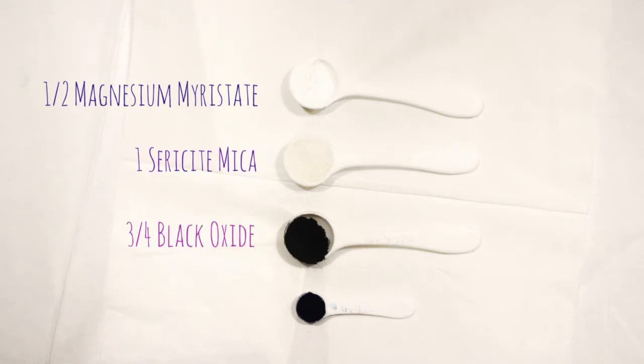Mix the ingredients in the following ratio. I'm using more magnesium mirror state than usual because ferric ferrocyanide and black oxide are kinda gritty, and I find that increasing the ratio of magnesium mirror state here helps them press better.